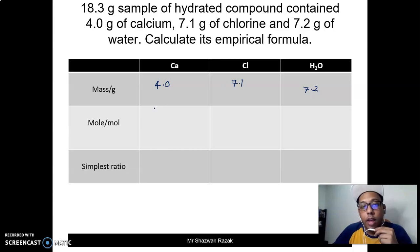The next thing that we have to do is we have to divide this with its molar mass, which is for calcium is 40, for chlorine is 35.5, for water 7.2 divided by H2O is 18 gram per mole.